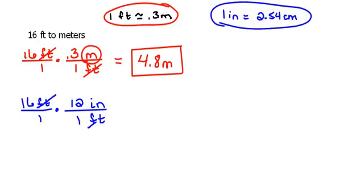Now those feet will cancel. Now we do not want inches, so we're going to put inches on the bottom so it will cancel, and we have that conversion between inches and centimeters—that is, one inch is 2.54 centimeters. Now our inches will cancel.